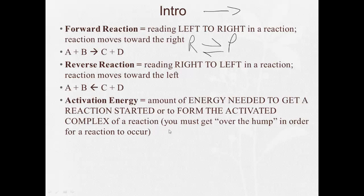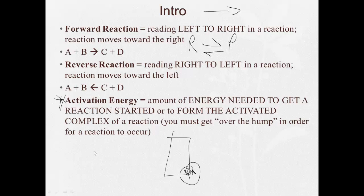Activation energy is the amount of energy needed to get a reaction started, or to form what's called the activated complex of a reaction. You must 'get over the hump' in order for the reaction to occur. For example, if you're going to burn a sheet of paper, it's not going to spontaneously burn. First, you have to light a match to provide the initial heat to get it started. After that, the burning of the paper provides more fire for the rest of the paper to burn. That getting over the hump — getting things started — was the lighting of the match. That's referred to as the activation energy.